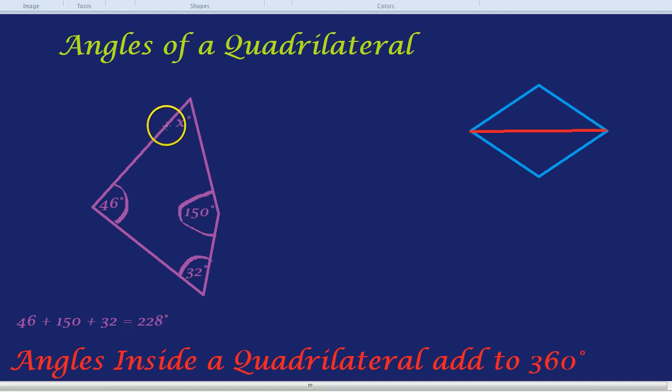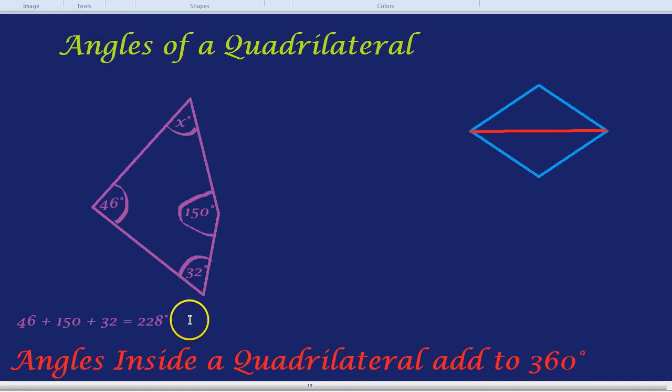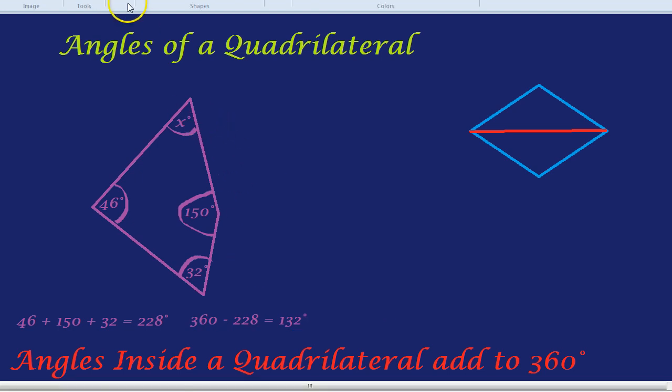So what's our missing angle, X? Our missing angle X is whatever is left over from 360 degrees, because the angles inside of a quadrilateral always add up to 360. Therefore, 360 take away 228, and see what's left over. That would be 132. So indeed, the angle X equals 132 degrees.